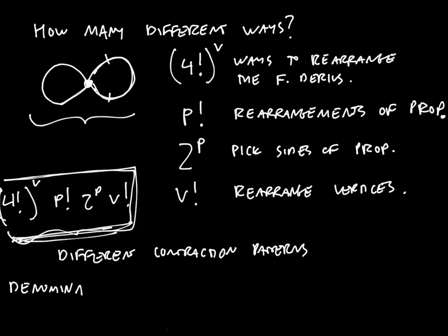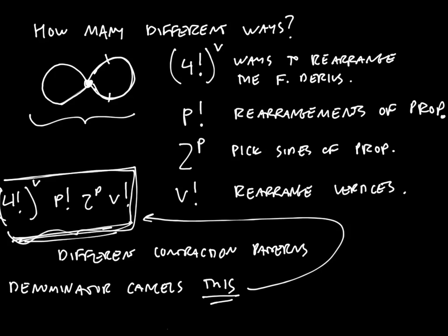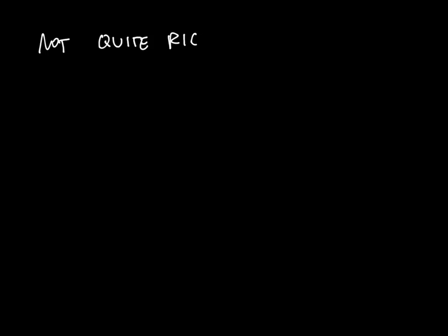This cancellation might make you think there is no extra factor to worry about — in other words, the extra factor in this Feynman diagram is simply one, so there is no further combinatorics to do. However, this is not quite right. The reason is that we have actually over-counted the number of different ways to rearrange things, because we assumed that every possible rearrangement would give a distinct configuration, which isn't quite true — some rearrangements can cancel each other.